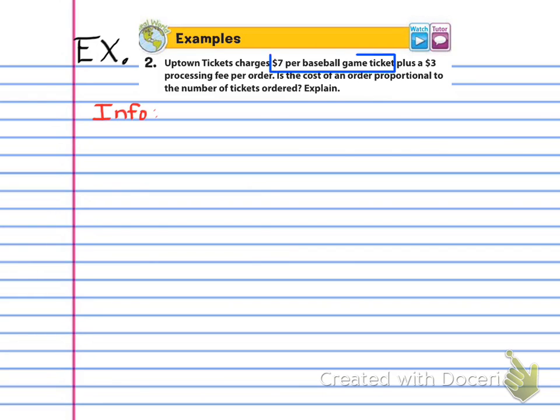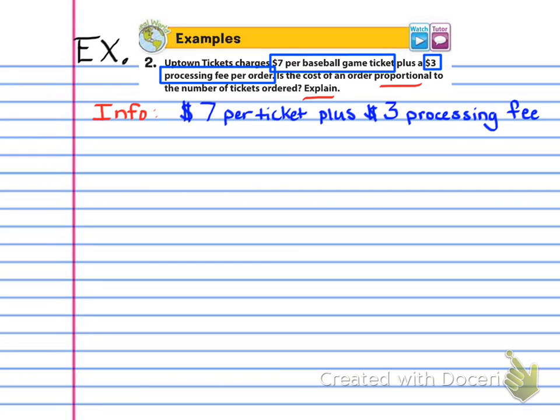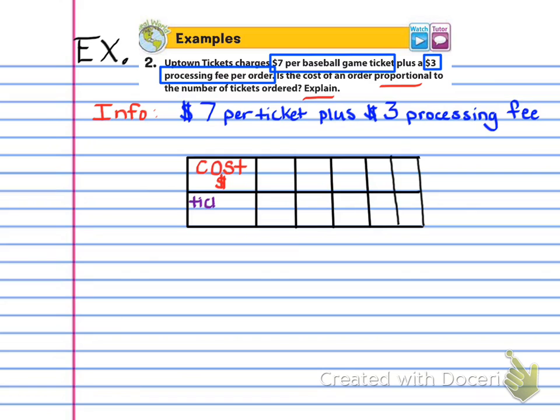So the first thing we want to do is pull out the information. I put a box around the $7 per game ticket and the $3 processing fee per order. And then I've underlined pieces of the question so that I remember exactly how many answers I need to have because a lot of you do forget to do the explain. So you want to make sure you pull that out. So go ahead and write info. And then you're going to write $7 per ticket plus $3 processing fee. So that's important. Then you want to make yourself a table.